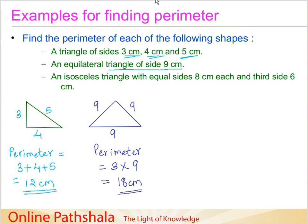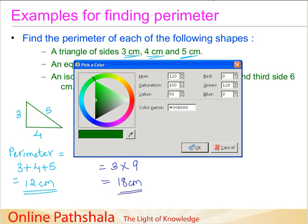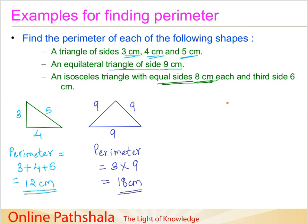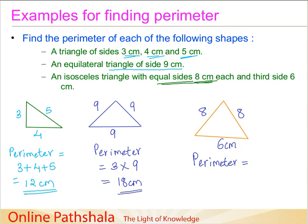The third example gives an isosceles triangle with two equal sides of 8 centimeters each and a third side of 6 centimeters. An isosceles triangle has two sides of equal length. Drawing the triangle and labeling the sides: 8 cm, 8 cm, and 6 cm. The perimeter equals the sum of the three sides: 8 plus 8 plus 6. Since 8 plus 8 is 16 and 16 plus 6 is 22, the perimeter is 22 centimeters.